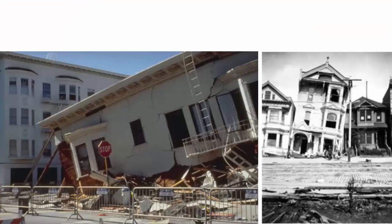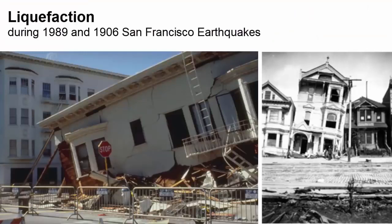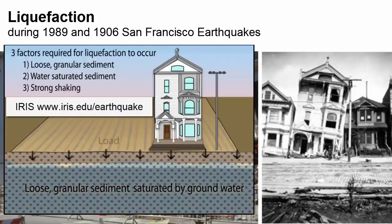What are some other things that contribute to damage during an earthquake? Unconsolidated sands and muds can behave like liquids when shaking and heavy buildings on top can sink into them, a process called liquefaction.